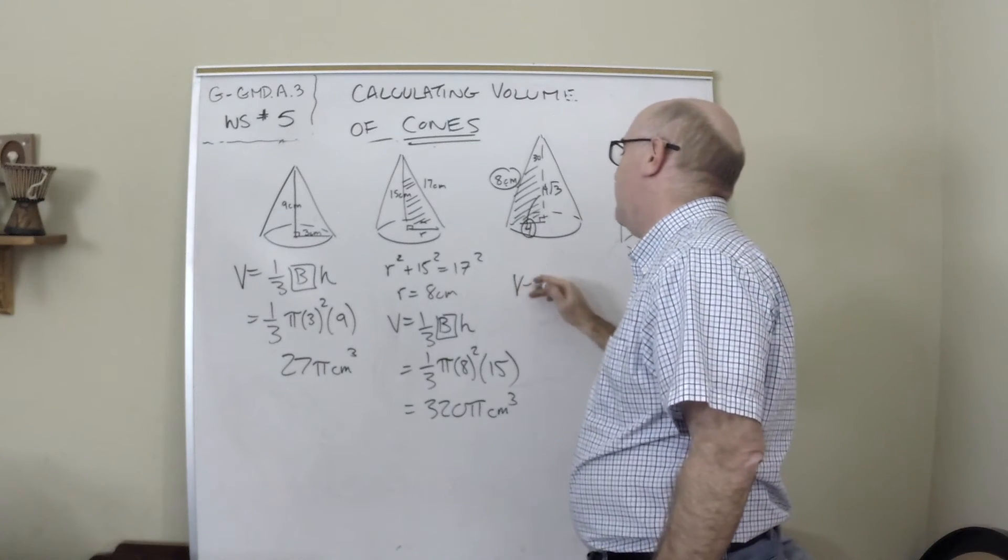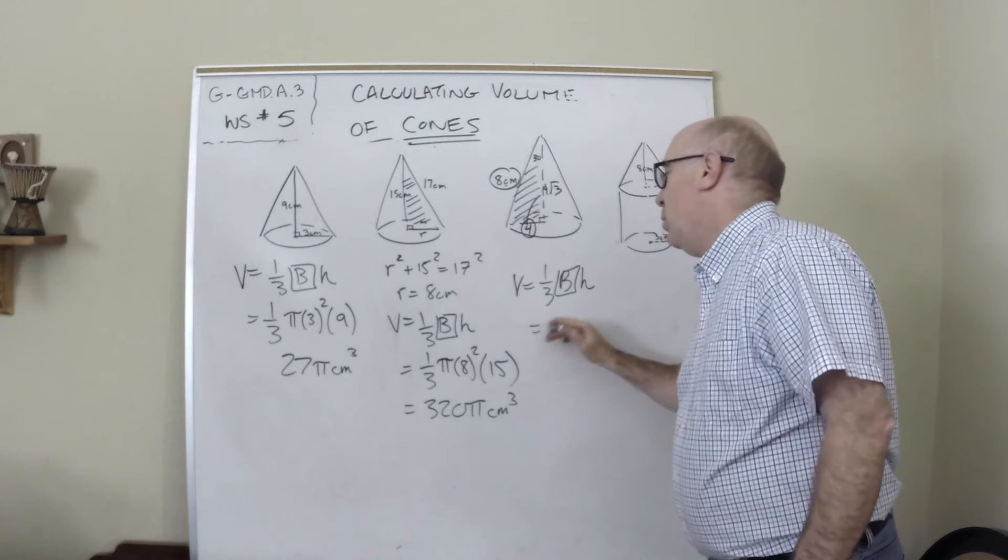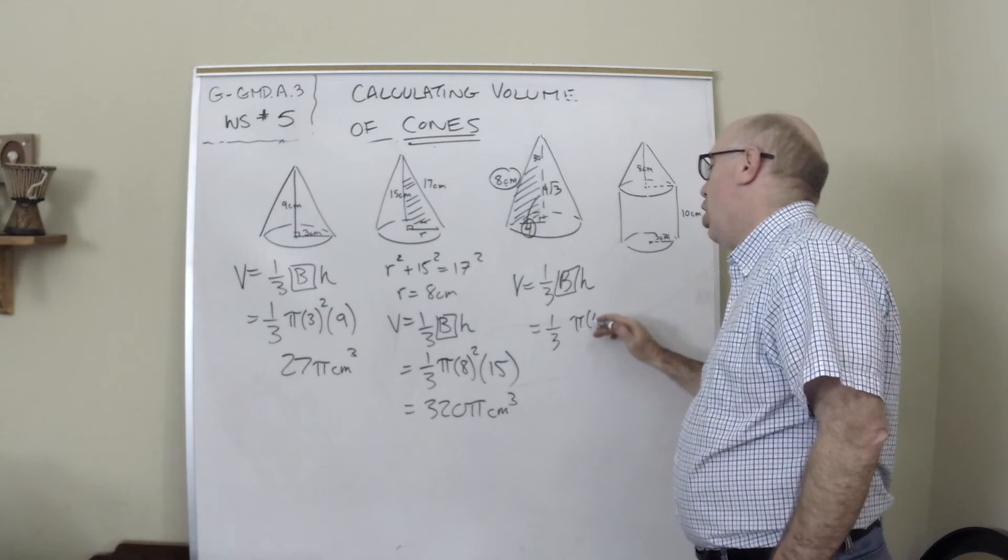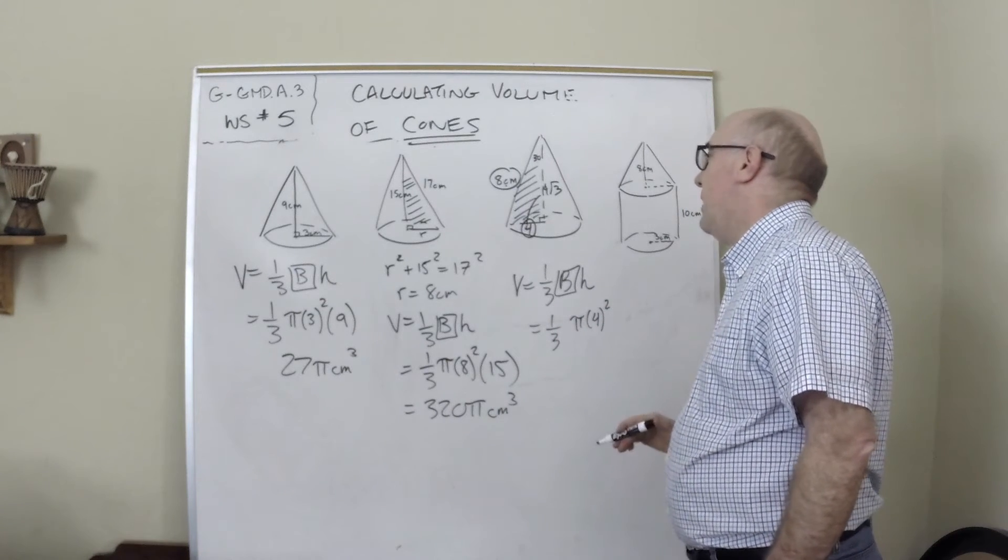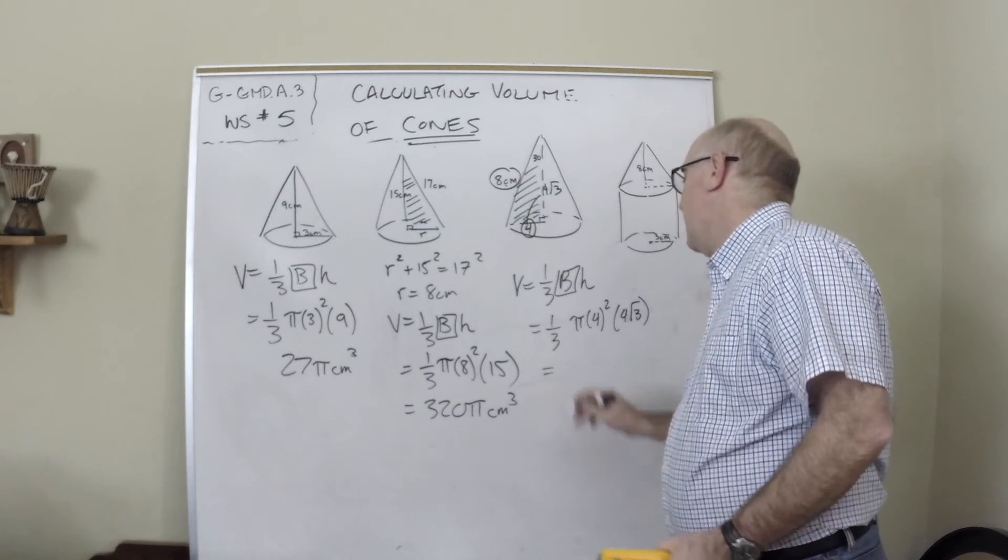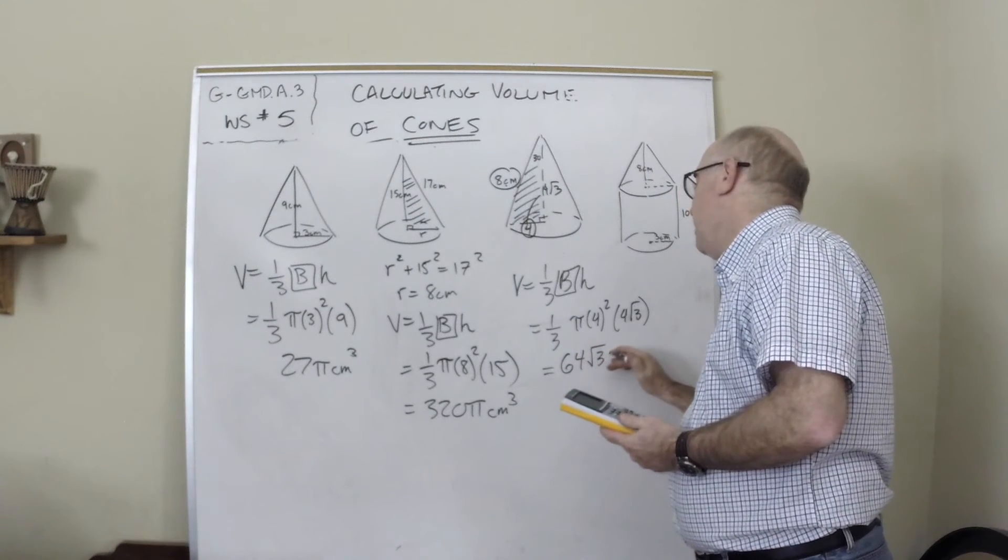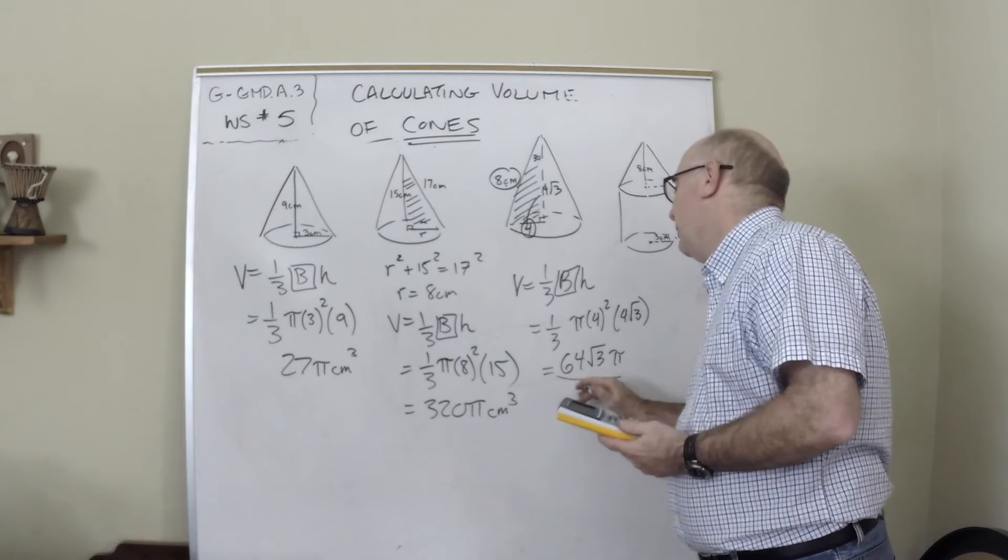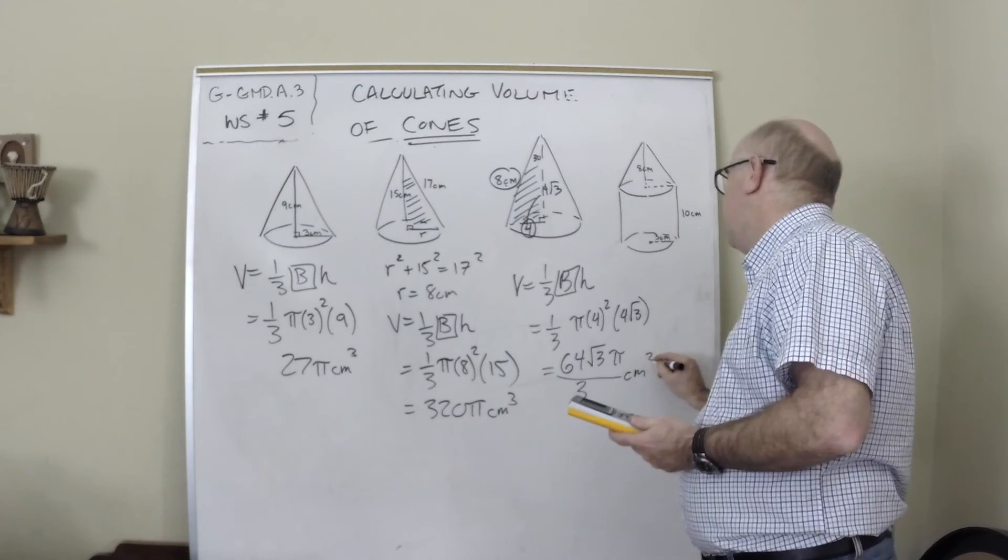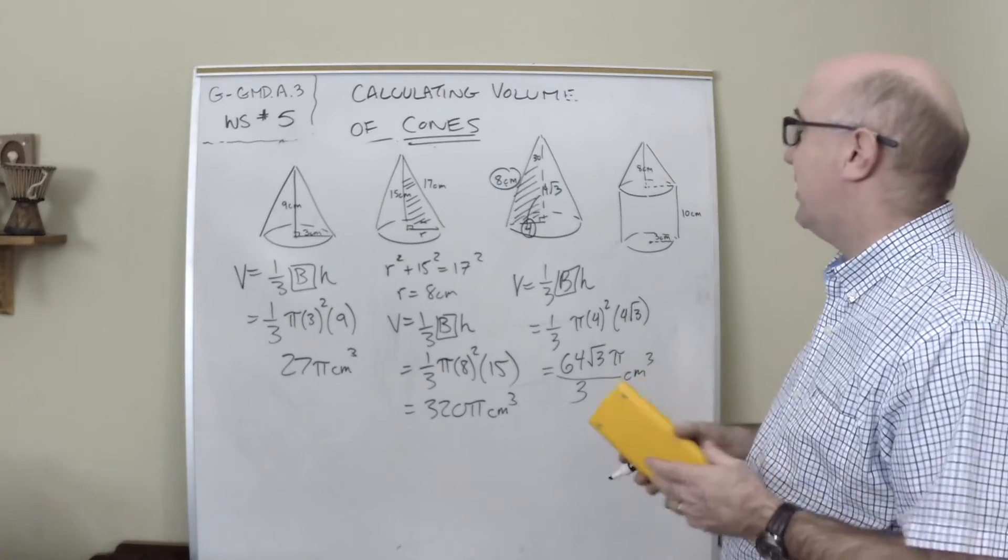So now we're ready to go. Volume equals one-third the area of the base times the height, one-third. Now the area of the base is πr² and then the height is 4√3. Now this is not going to be quite as pretty a number. This is 64√3π all over 3. Could we reduce that or simplify that? We can put it as a mixed but it isn't going to be pretty. That's just our answer right there. Welcome to mathematics.